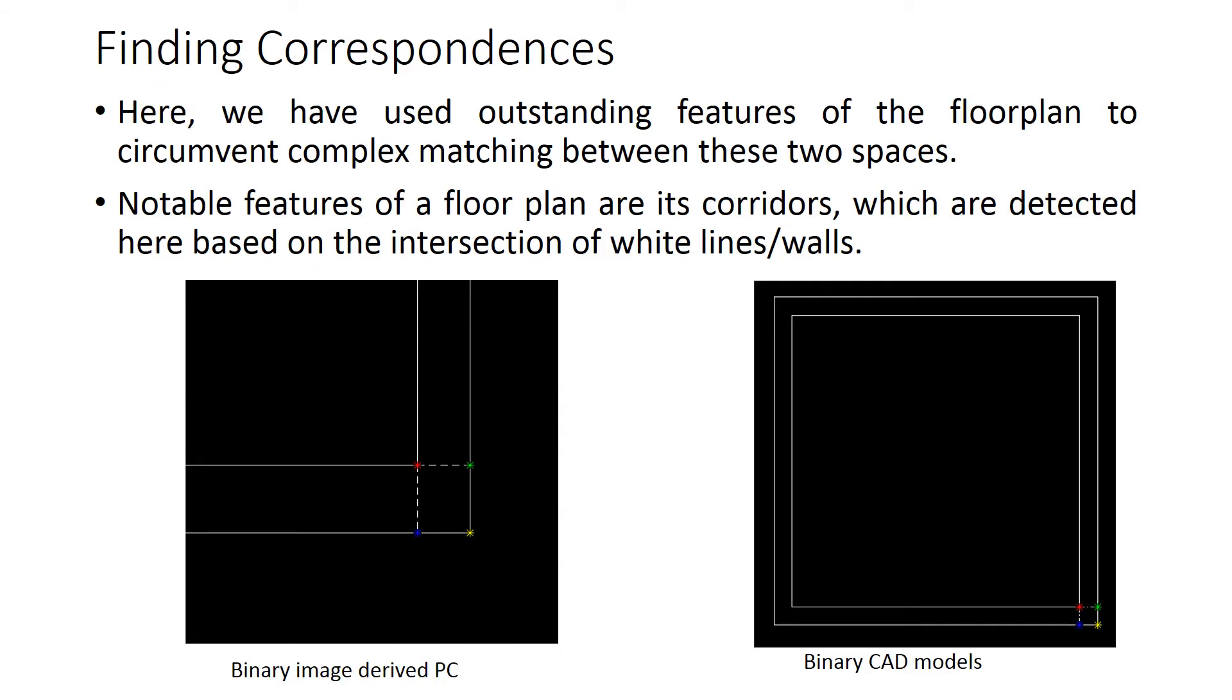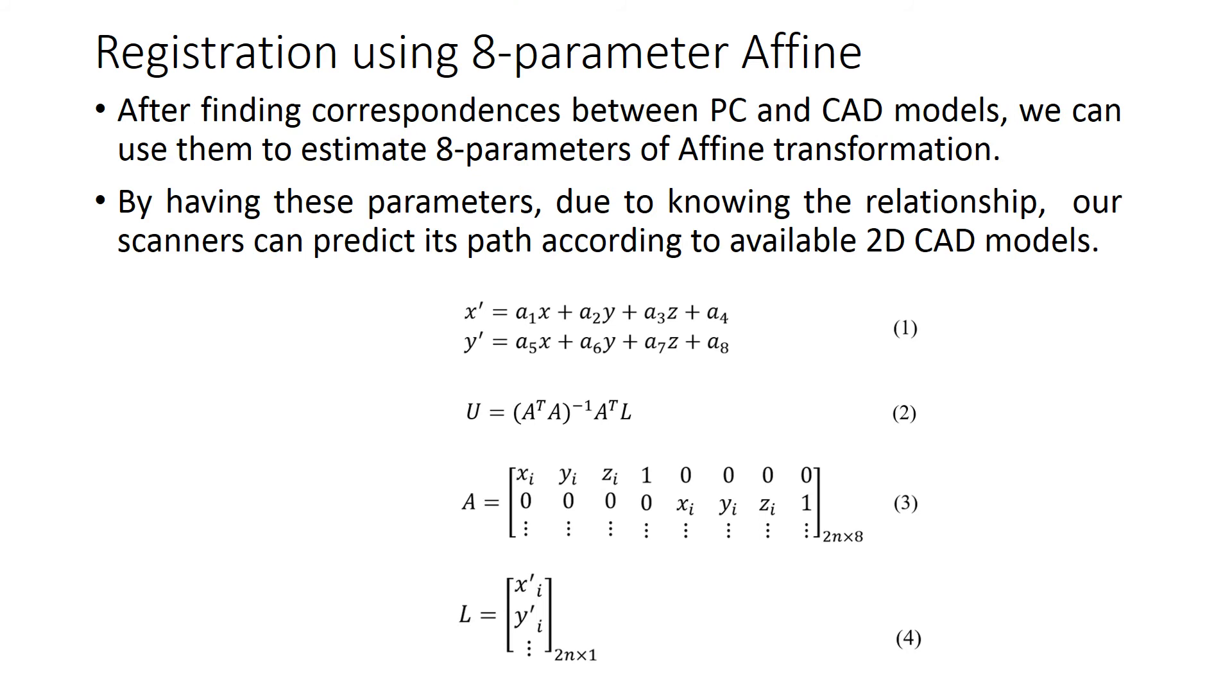At the second stage, we have used outstanding features of the floor plan to circumvent complex matching between these two spaces. Notable features of the floor plan are its corridors, which are detected here based on the intersection of white lines walls. And as you can see here, the green point on the left image is corresponding to that of on the right image.